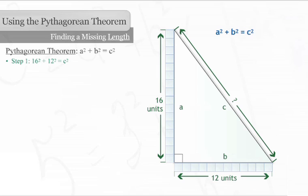The second step is to calculate the squares. 16 squared is 256, and 12 squared is 144. Now our calculation reads 256 plus 144 equals C squared.